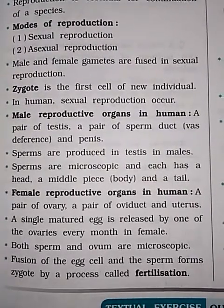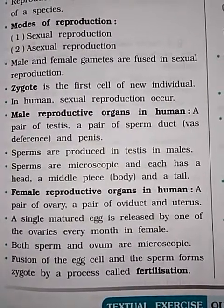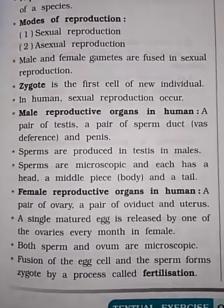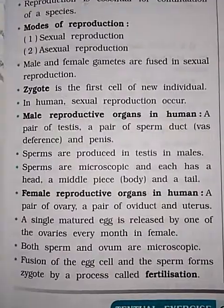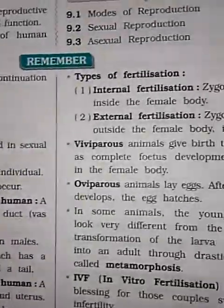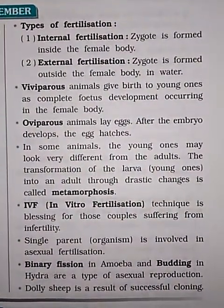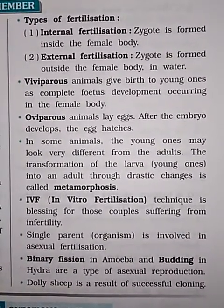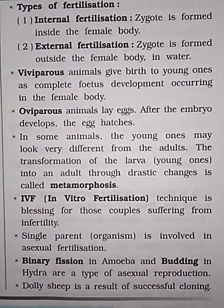Both sperm and ovum are microscopic. When sperm and ovum fuse, that is called fertilization. Zygote is formed inside the female body. Zygote can also be formed outside the female body in water.